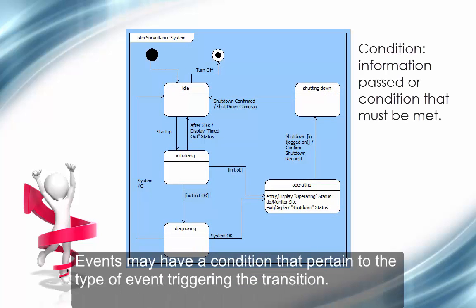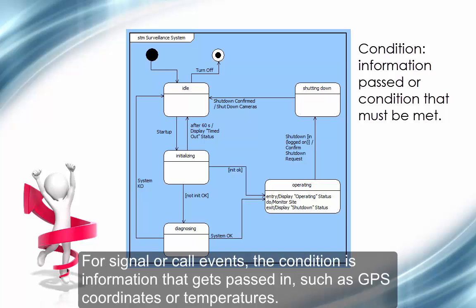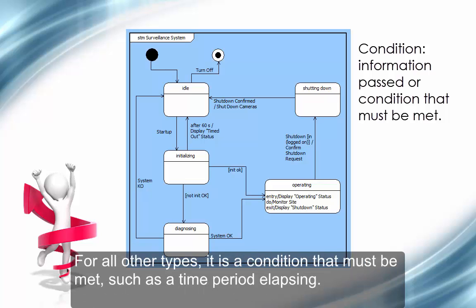Events may have a condition that pertain to the type of event triggering the transition. For signal or call events, the condition is information that gets passed in, such as GPS coordinates or temperatures. For all other types, it is a condition that must be met, such as a time period elapsing.